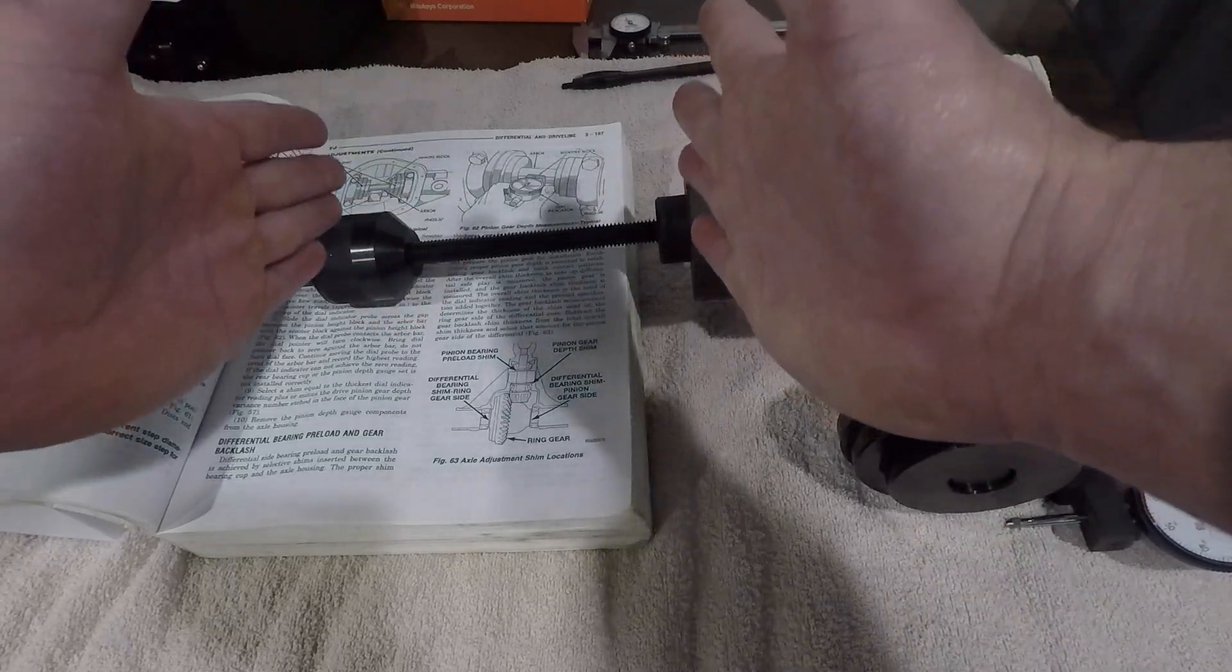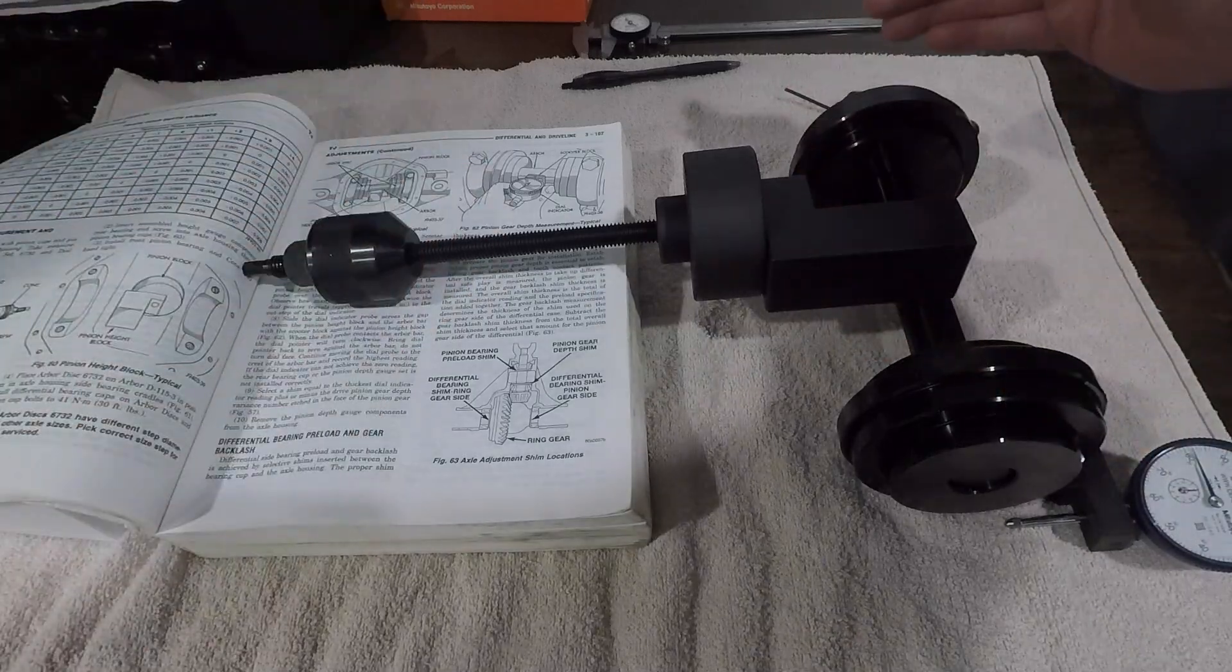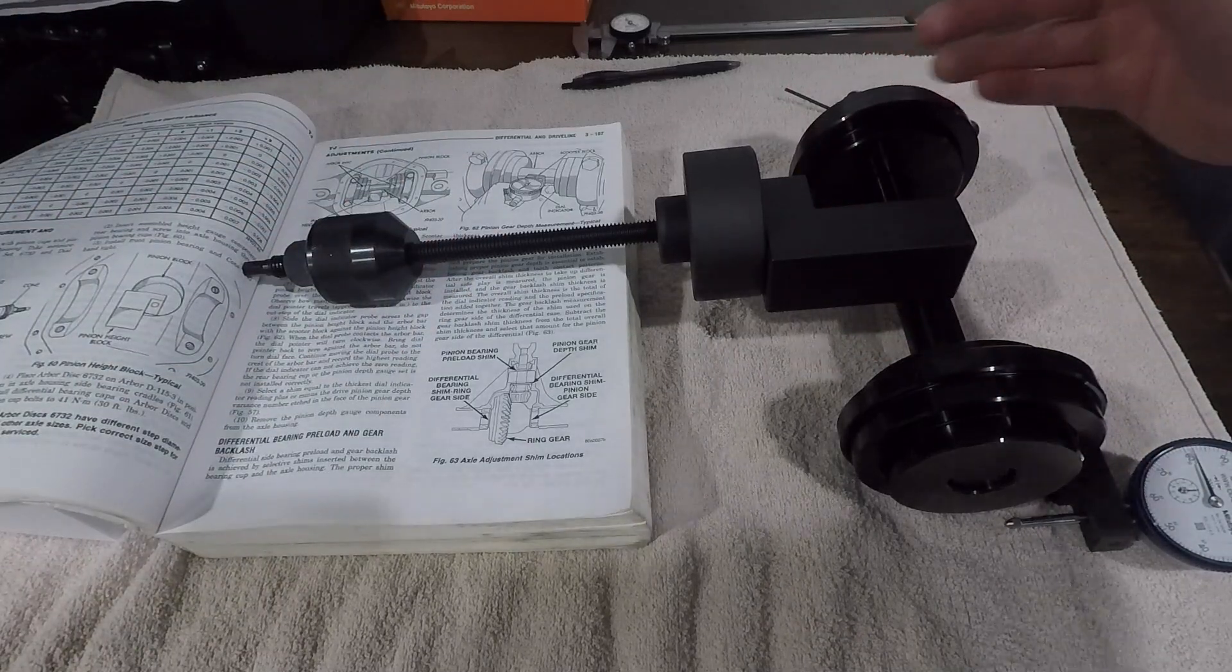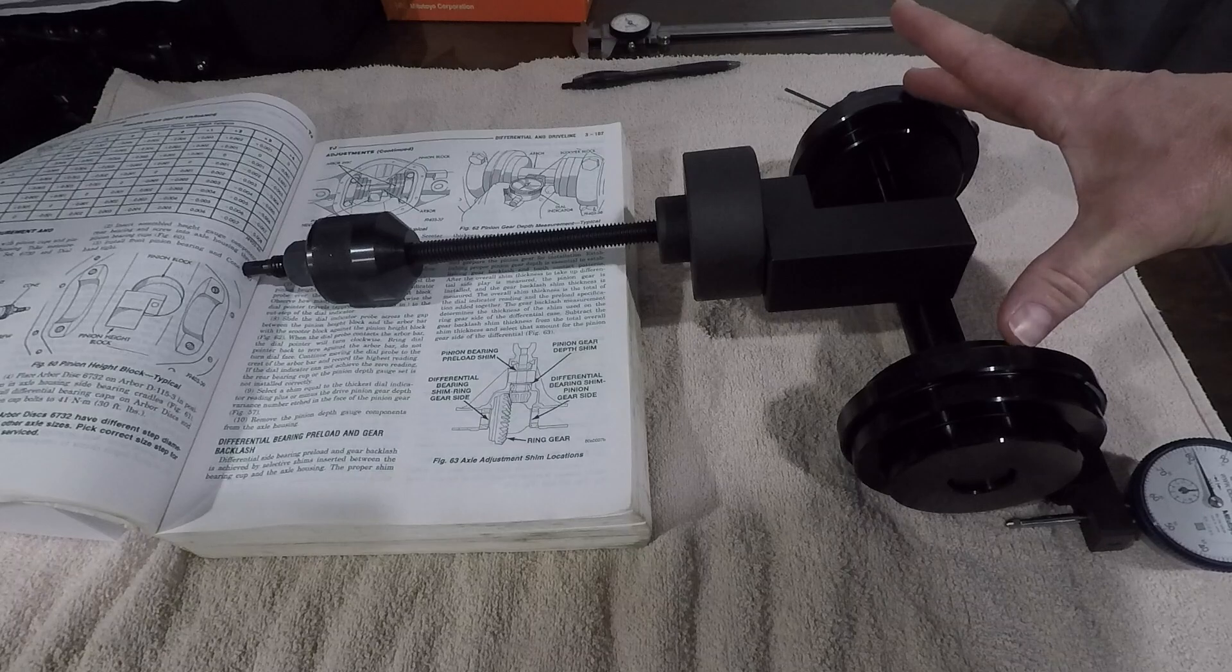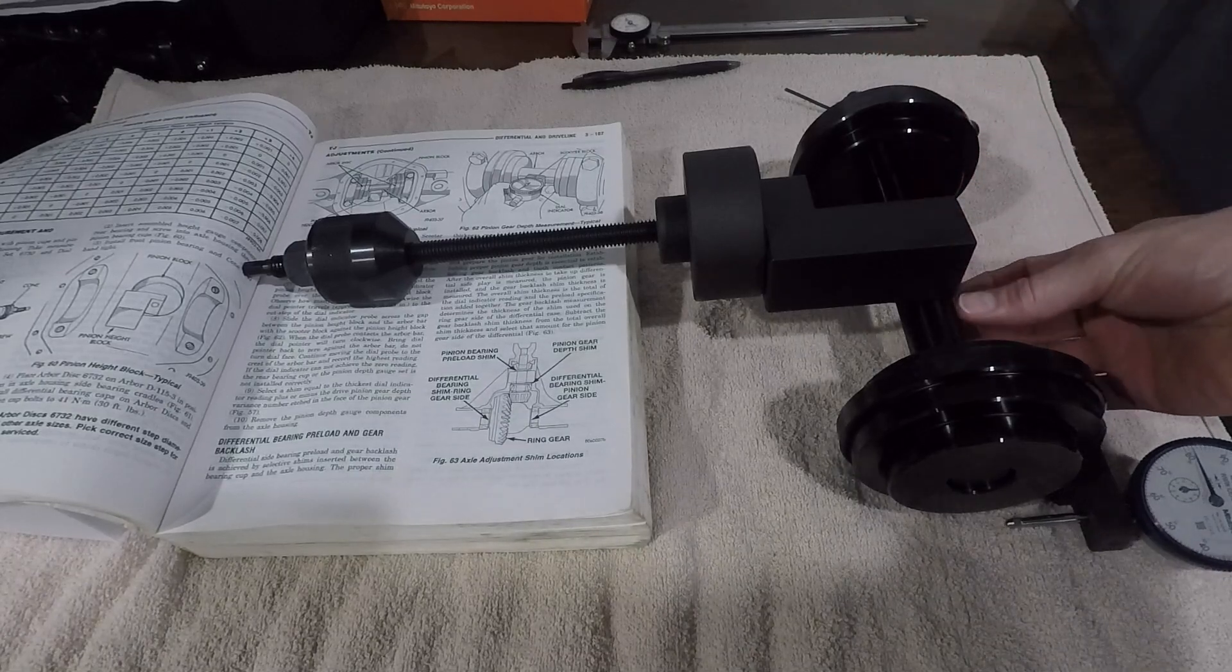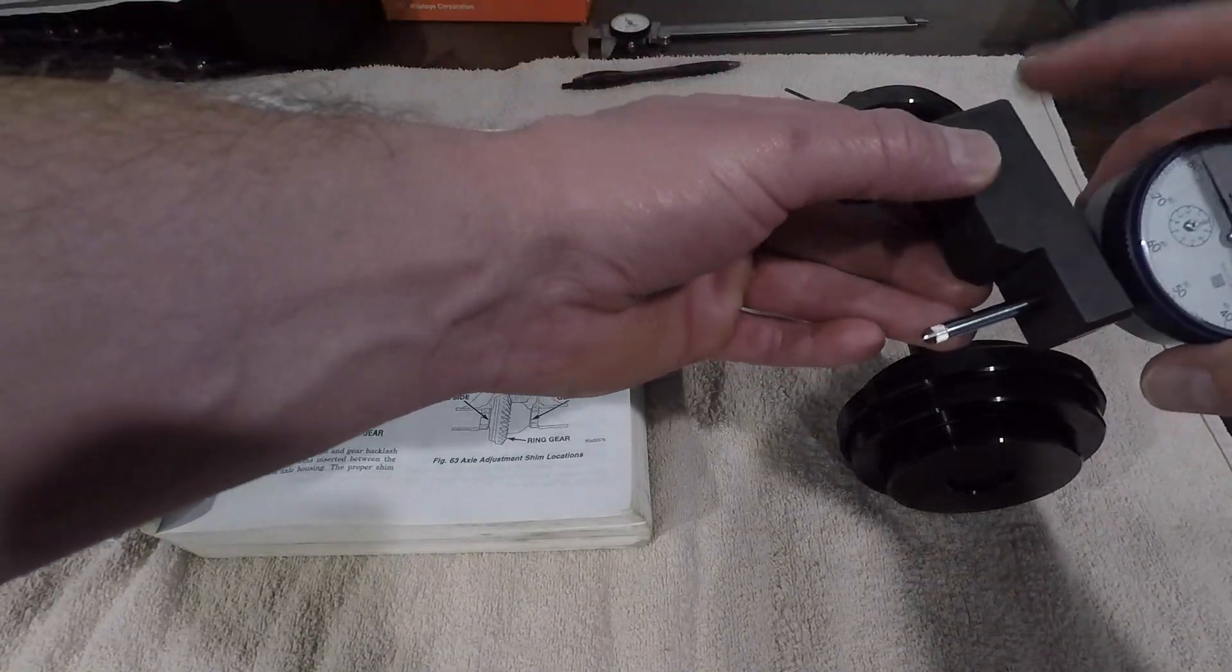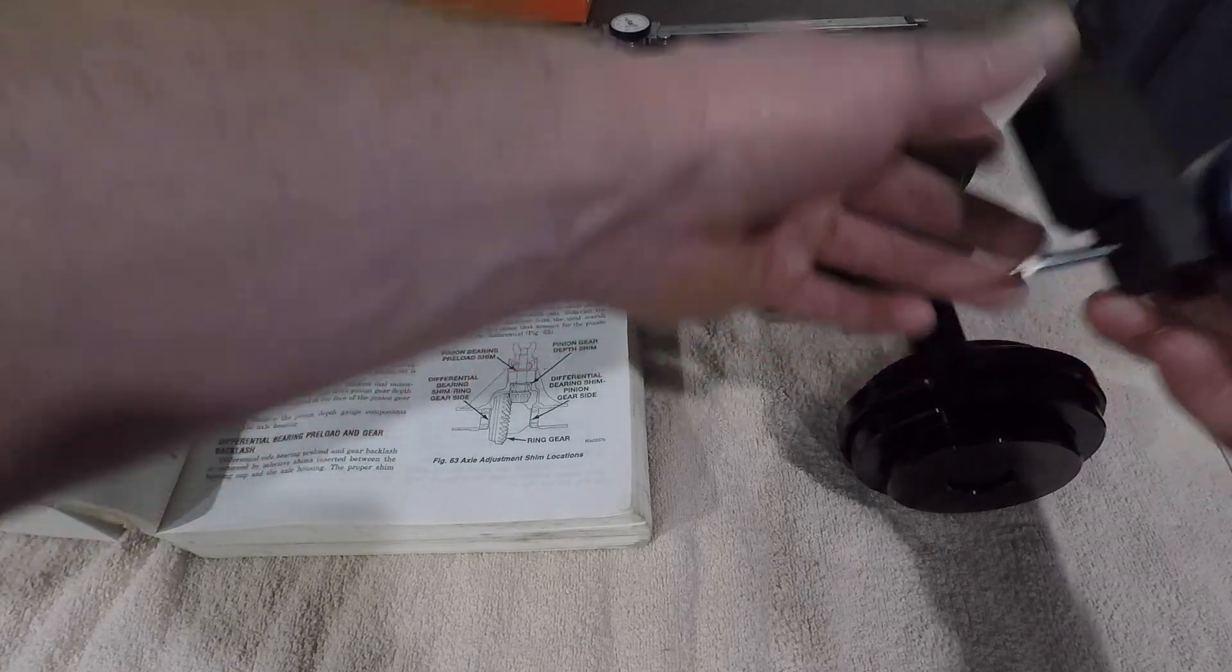So you use your inner pinion bearing and your outer pinion bearing to hold this setup nice and tight. Once this is all tight in the housing, then you add what these are called arbor discs which simulate the bearing and races in the housing. And this is just the bar going across simulating the center line.